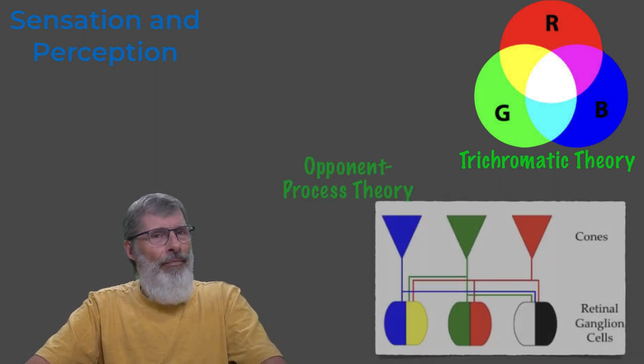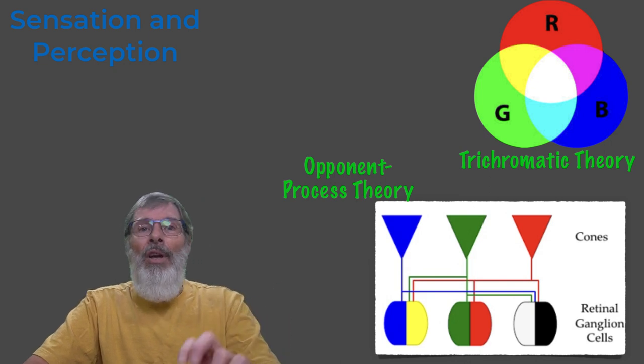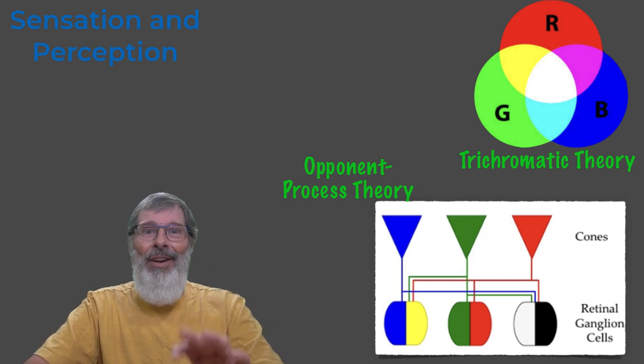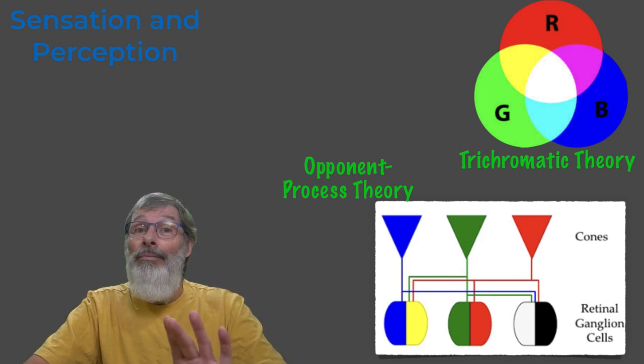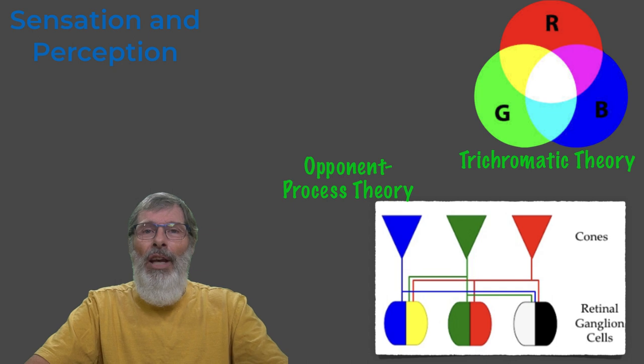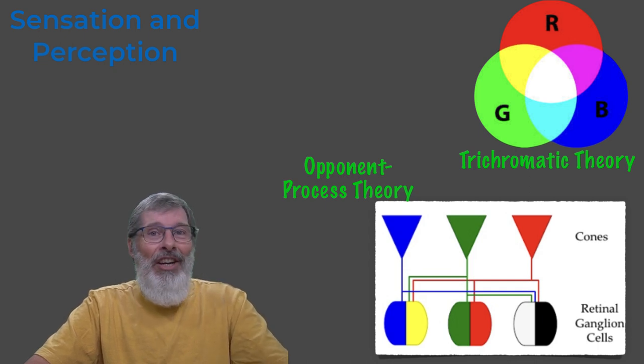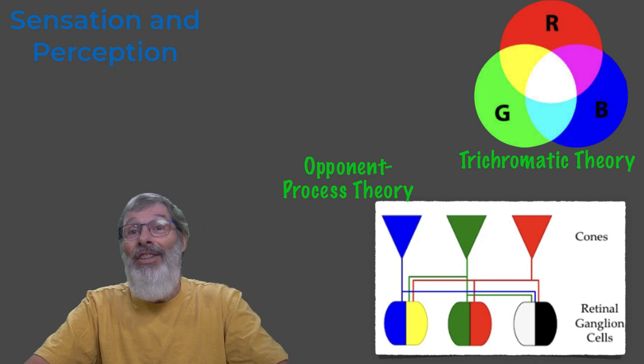Now the second theory, opponent process theory, suggests that color perception assumes four primary colors: red, green, blue, and yellow. Cones are arranged in pairs. And when one member of the pair is activated, the other is not. The after image: when the green is activated, the red is not. The green can tire and therefore all you would see after would be red. Now these pairs of receptors are what make after images possible since they cannot transmit both opposing colors at the same time.